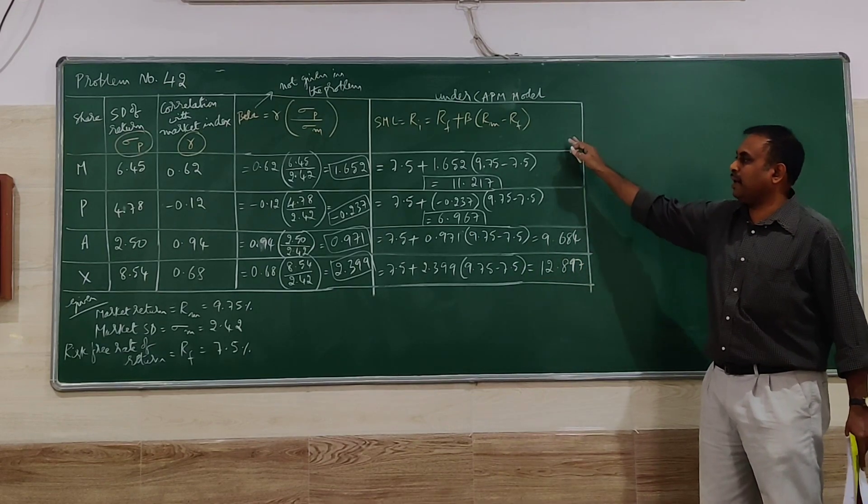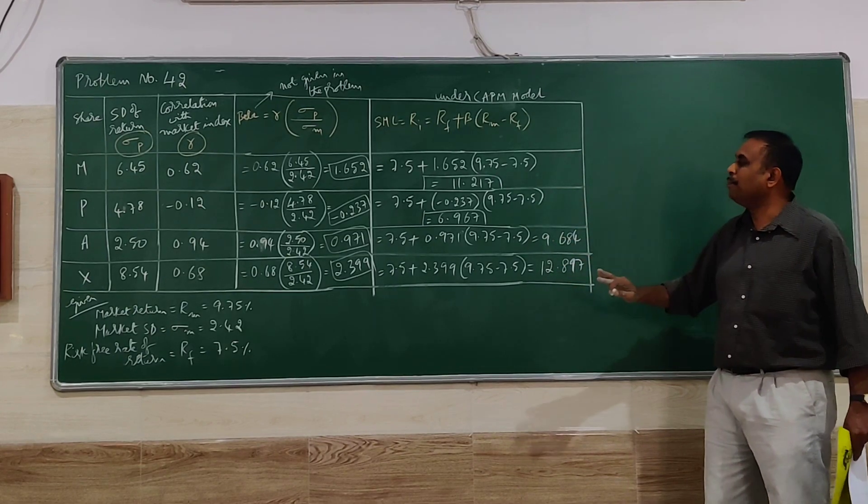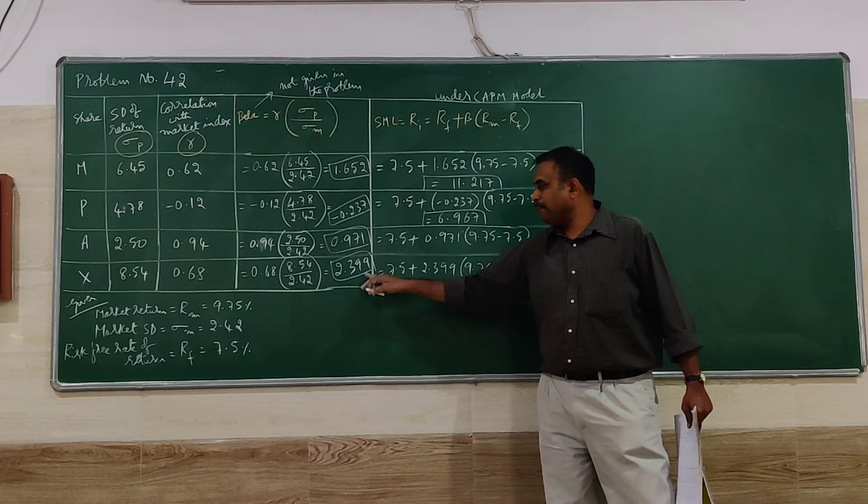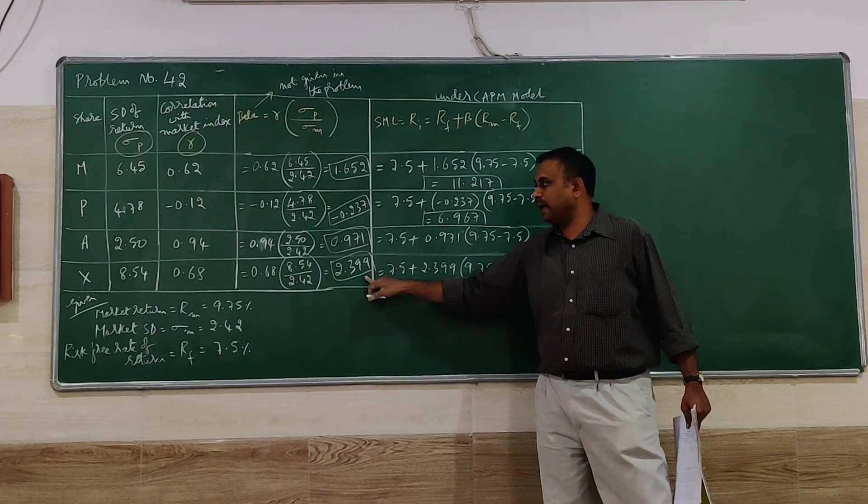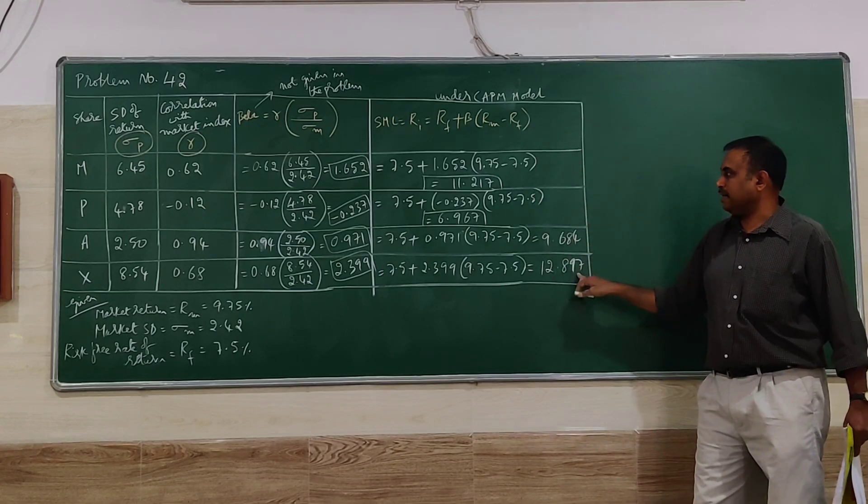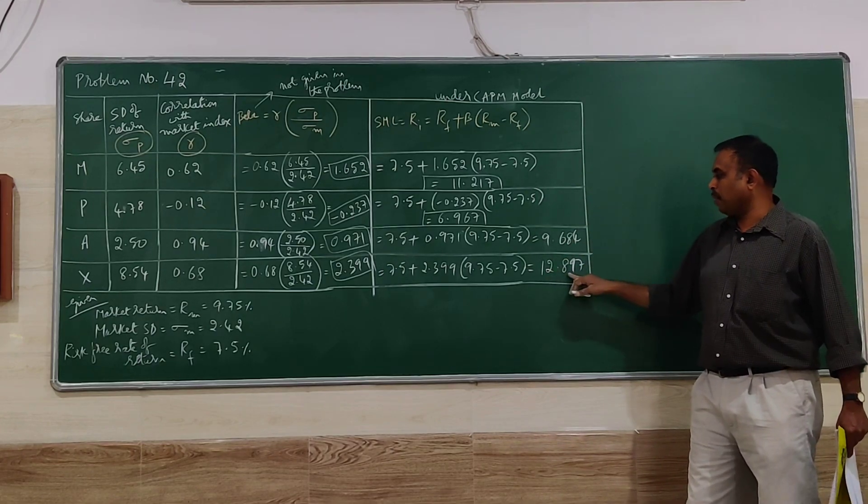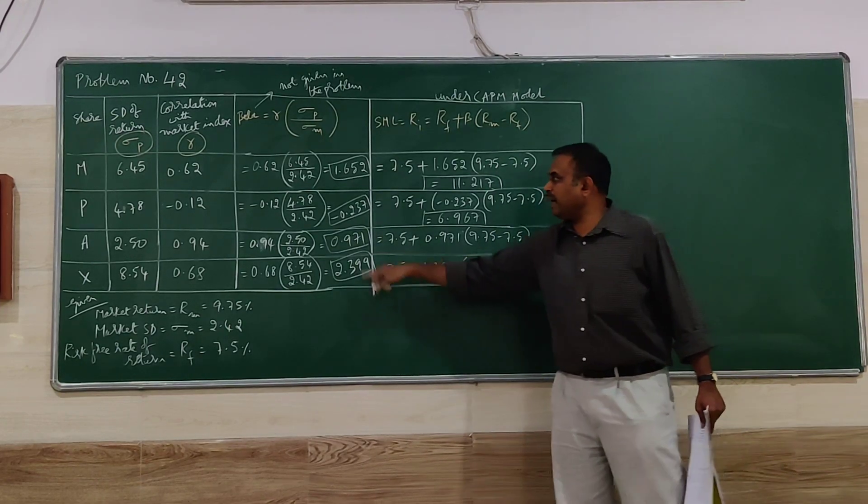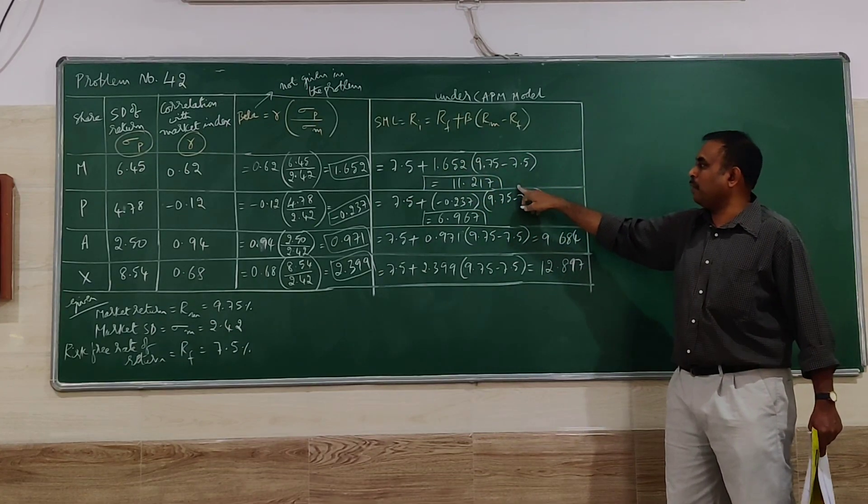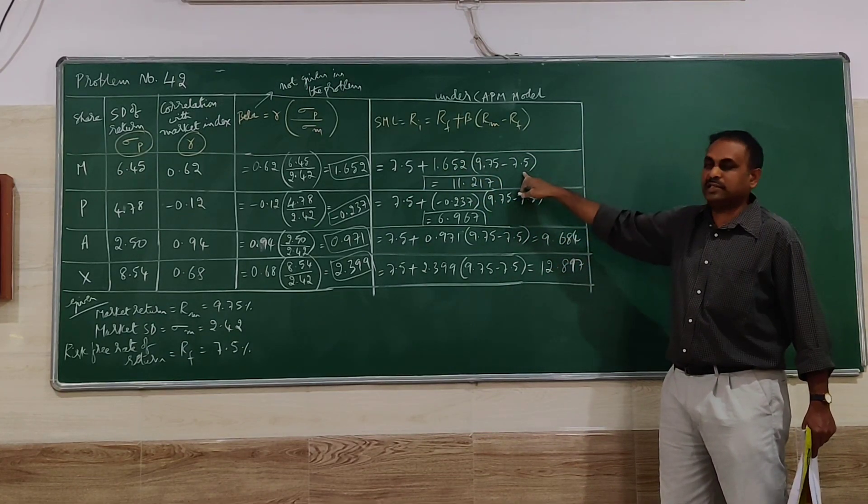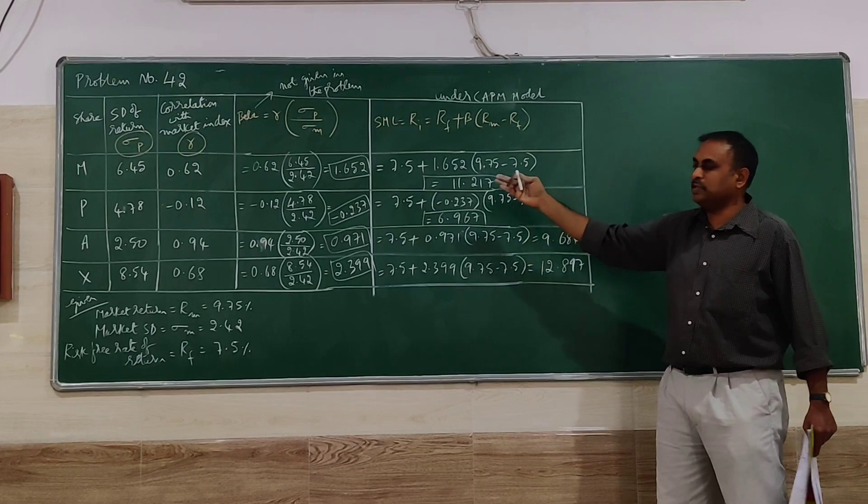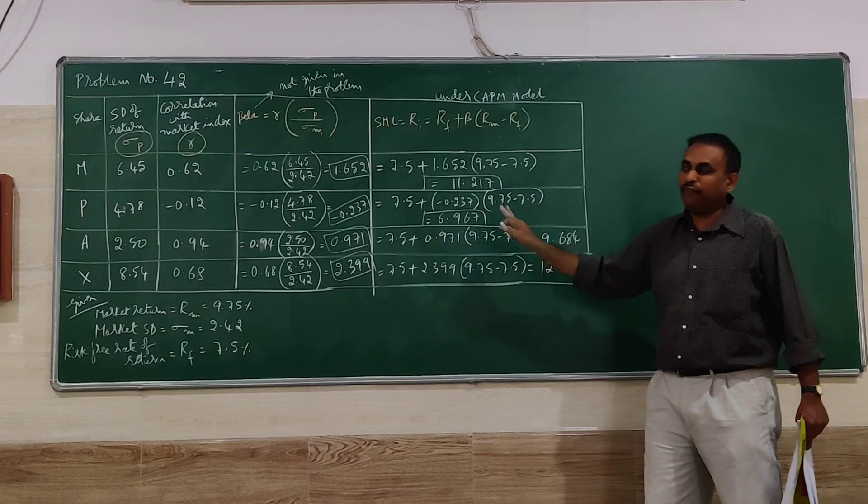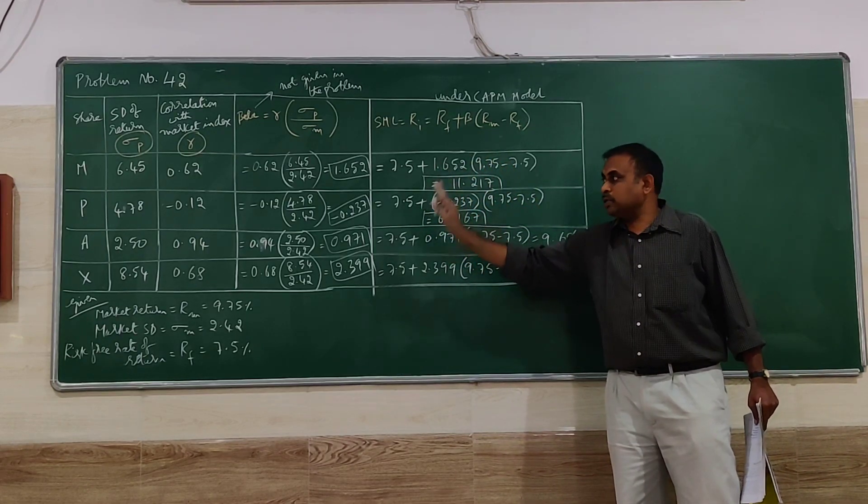So when you do this, you get individual security values. Here you have to observe what they have told: comment on that. Beta is highest for X, you can see the return is also highest at 12.897. When beta is highest, return is highest. Second highest beta is for M at 11.217, second highest return. So as the beta is more, the return is also more. There is a conclusion which you have to write for this particular stock or stocks.